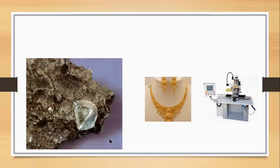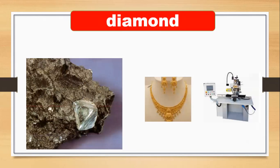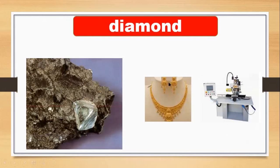Let's talk about diamond. This is a rock and we can find diamonds from rocks. We can make different things from diamond, like jewelry. We can use diamond to make jewelry and in cutting machines. This is the jewelry and this is the cutting machine.